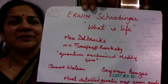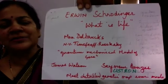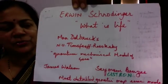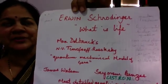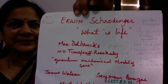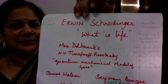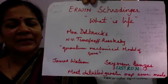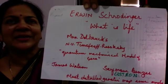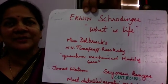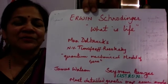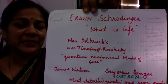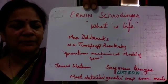One was James Watson, whom we all know. The second was Seymour Benzer. Benzer was also a physicist working on solid-state physics, and when he read this book he converted into a biologist. He got interested in T4 phage, started working on it, and created one of the most detailed genetic maps ever made.